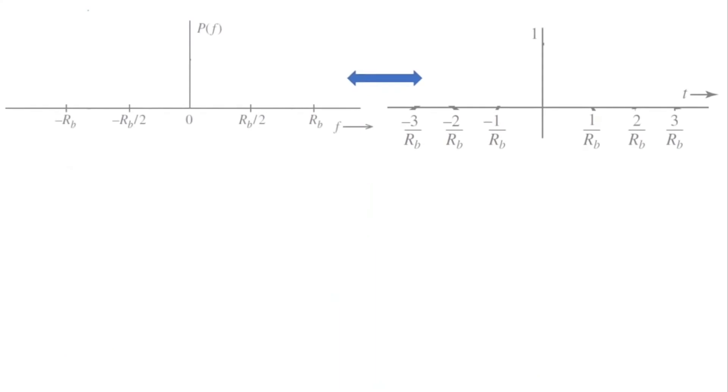For such let us consider again the frequency and the time plots for the minimum bandwidth spectrum. Let us introduce a variable alpha and assign it a value of 0. In time domain we will have a sinc pulse which is not practical as discussed earlier.